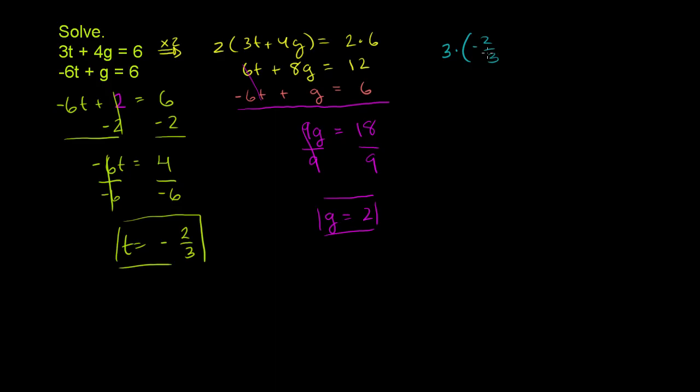3 times the t we got, negative 2 thirds, plus 4 times the g we got. So plus 4 times 2. Let's see what that is. 3 times negative 2 thirds, that's negative 2. The 3's cancel out.